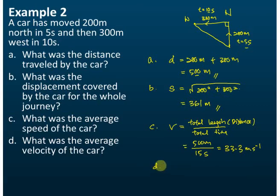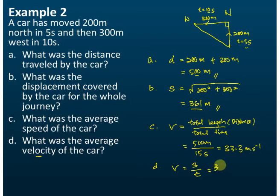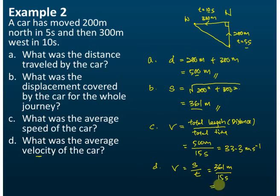How about part D? What was the average velocity of the car? Velocity, symbol v, is equal to displacement divided by time. The displacement is 361 meters, divided by the total time taken, which is five seconds plus 10 seconds, so 15 seconds. By using your calculator, the answer is 24.1 meters per second.